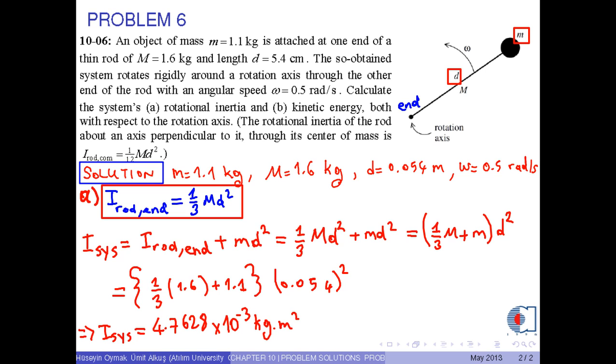Notice that the unit of the rotational inertia is kilogram times meter squared. And the result in three digits is approximately 4.76 times 10 to the power minus 3 kilogram times meter squared.